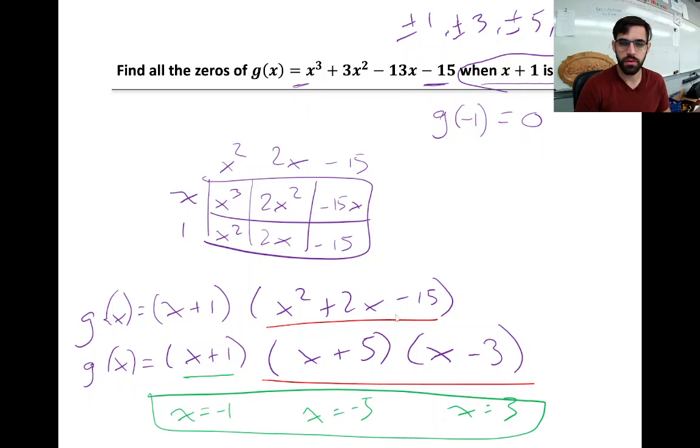And then this one, we could do the same thing. We could pull out our a, b, our b over a, and see if it, use factor theorem, see if it equals 0. But in this case, this is a quadratic. We could just factor this thing with pre-calc 11 methods.